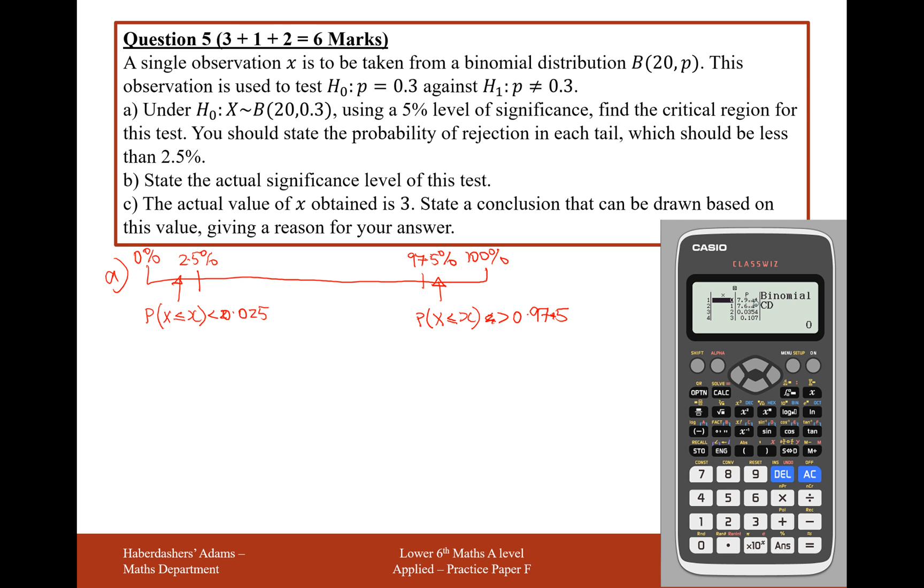Now what we're looking for first is the highest value of X where the probability up until that value of X is less than 0.025. For example, if we were going up until 1, so this is the probability of flipping 0 or just 1 head, that's a very low probability, 0.0076. But the probability of flipping 2 heads, or 0 head, 1 head, or 2 heads, is equal to 0.0354.